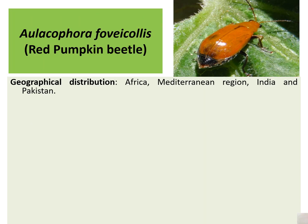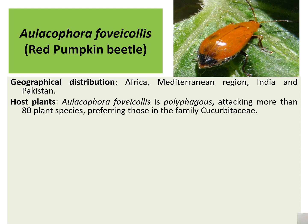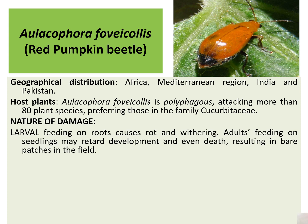The geographical distribution includes Africa, the Mediterranean region, India, and Pakistan. Aulacophora foveicollis is polyphagous, attacking more than 80 plant species, preferring those from the family Cucurbitaceae.